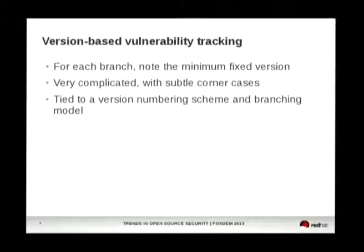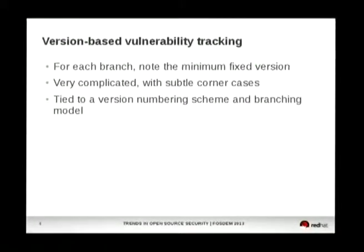To use these identifiers, we have to put the identifier in relation to the software we ship. The first aspect is the package: we identify which package is affected, and for each branch we ship we note a minimum fixed version when we fix the package. This is an approach based on version-based vulnerability tracking, which I wanted to present as the ultimate approach.